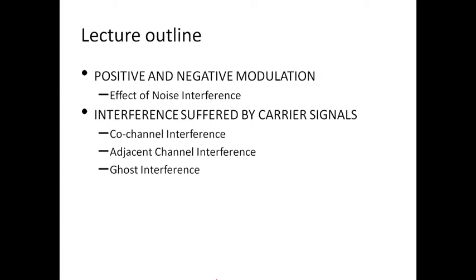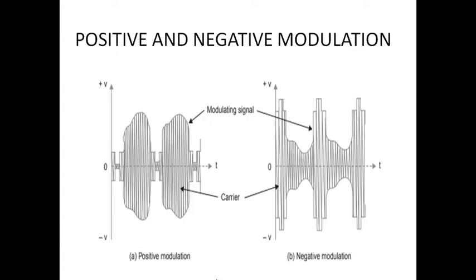We start the lecture with positive and negative modulation. When the intensity of a picture's brightness causes an increase in the amplitude of the modulated envelope, it is called positive modulation. Whenever there is an increase in the brightness, the amplitude or envelope of the carrier increases.